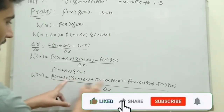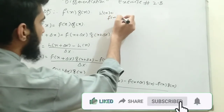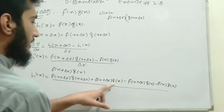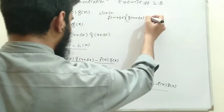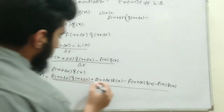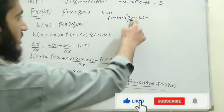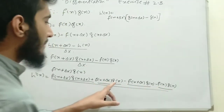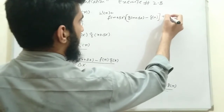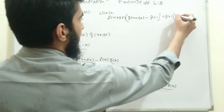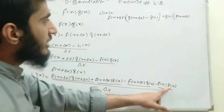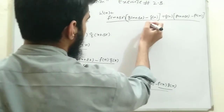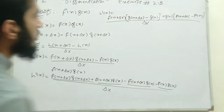Now we factor the expression. In the first two terms, f(x + Δx) is common, so taking it out gives f(x + Δx) · [g(x + Δx) - g(x)]. In the last two terms, g(x) is common, so taking it out gives g(x) · [f(x + Δx) - f(x)]. The whole expression is divided by Δx.